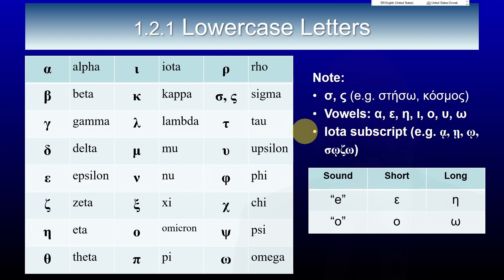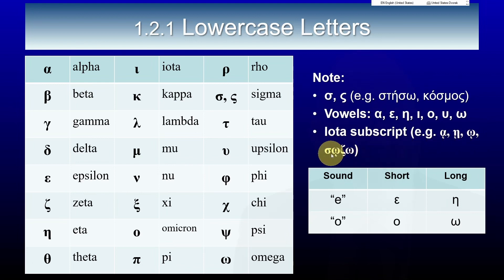Iota can be written underneath another vowel and is then called an iota subscript. We have some examples here: an alpha with an iota subscript, an eta with an iota subscript, an omega with an iota subscript. The iota subscript is found in the word sozo, which means heal or save. You only need to know that such a thing exists at this stage.